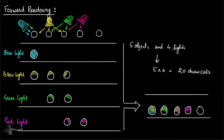Every single light in the scene increases the number of draw calls. That is why lights in games are kept to a minimum. In mobile games, either lights are baked into textures, or a vastly used technique is to keep one light in the scene to keep draw calls within limits. Consider an environment with 100 objects — every single light adds 100 draw calls, so the final count can become huge. That is why lights in mobile games are kept to a minimum.